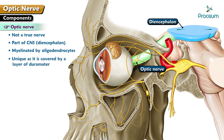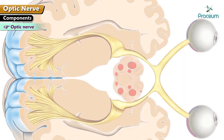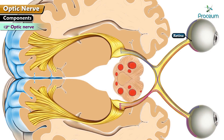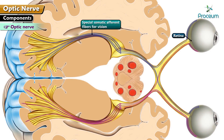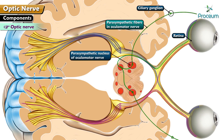The optic nerve is unique as it is covered by a layer of dura mater and leaves the orbit by passing through the optic canal. The components of the optic nerve are special somatic afferent fibers for vision, which arise from the retina, pass to the brain, and mediate the afferent limb of the pupillary light reflex, whereas parasympathetic fibers in the oculomotor nerve mediate the efferent limb.